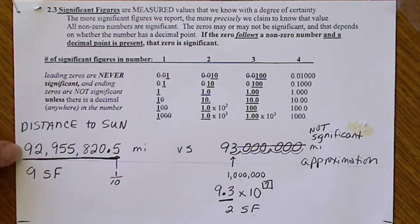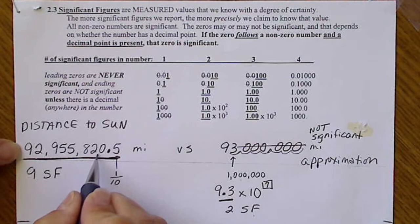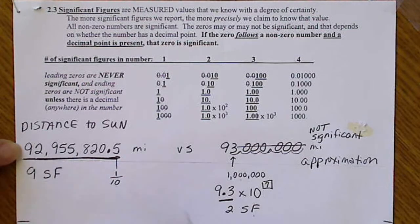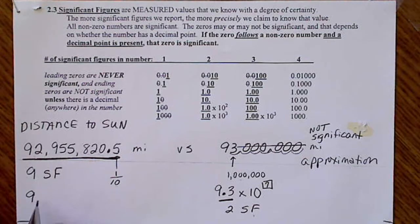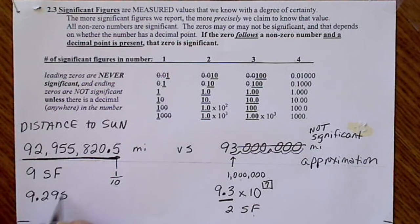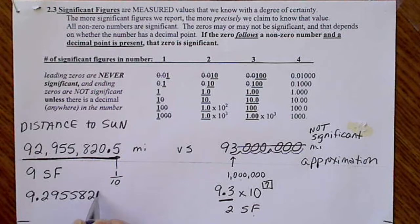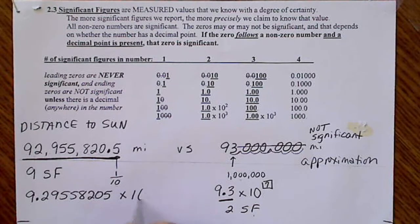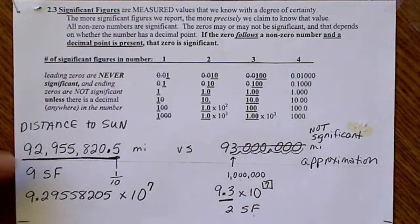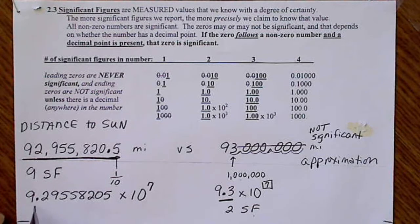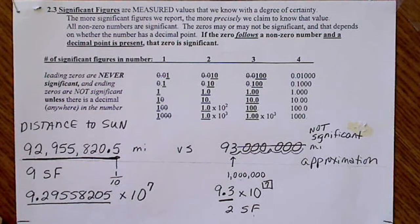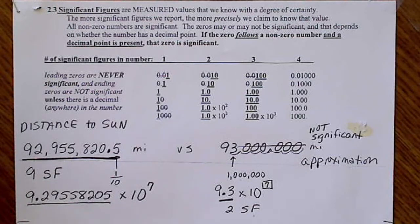It would be kind of silly to write this number in scientific notation. We would still move the decimal over 7 places, and we would write 9.29558205 times 10 to the seventh. So it really wastes more paper writing this number in scientific notation. The point is all 9 values are significant because they tell us with certainty what the numerical value for each of the placeholders is.